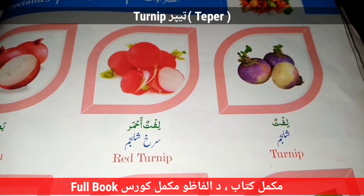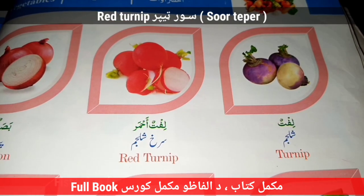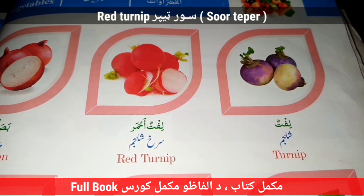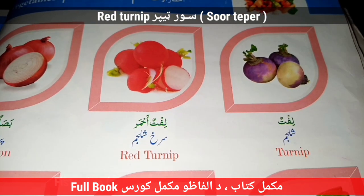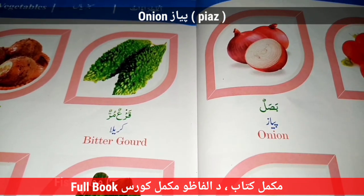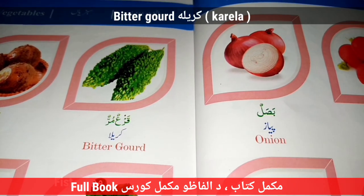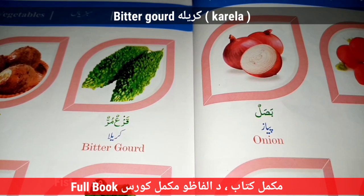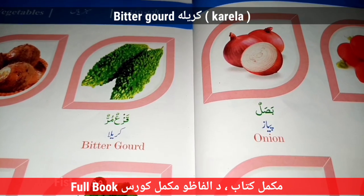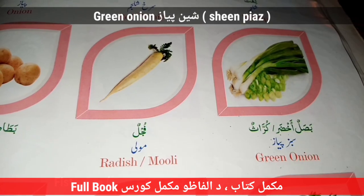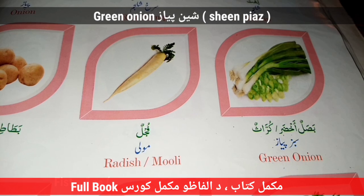Turnip — Teper. Red Turnip — Sur Teper. Onion — Pias. Bitter Gourd — Karela. Taro — Kachaloo. Green Onion — Snow Pias.